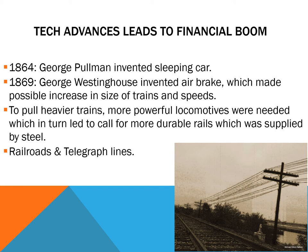Five years later, George Westinghouse invented the air brake — a new type of braking system. Instead of using friction to stop the train, these air brake systems could stop it much quicker. And if you can stop quicker, you can carry more and go faster, making the whole transportation process a lot easier.